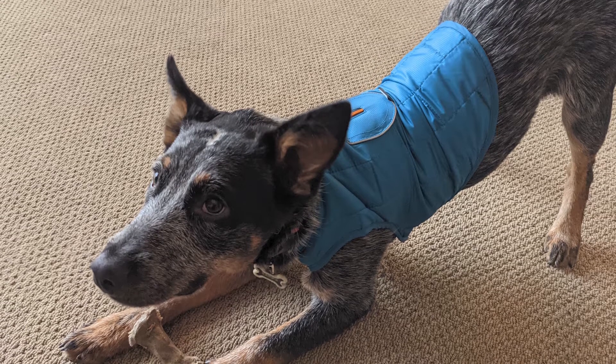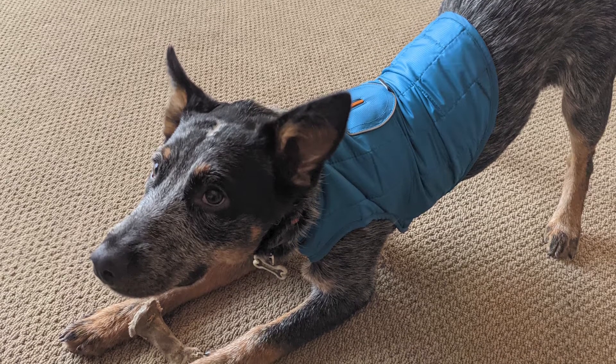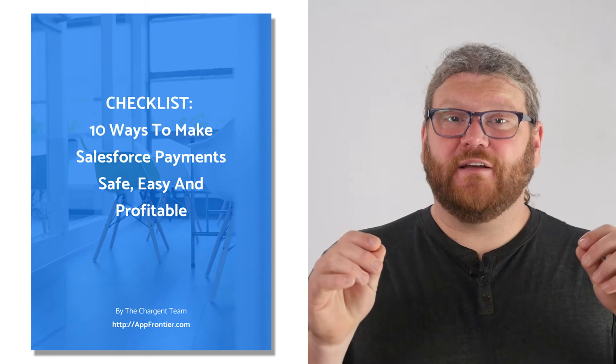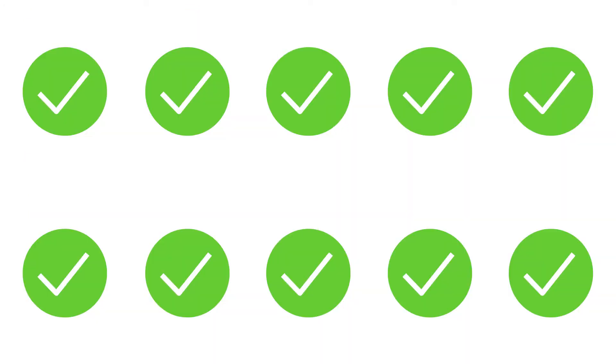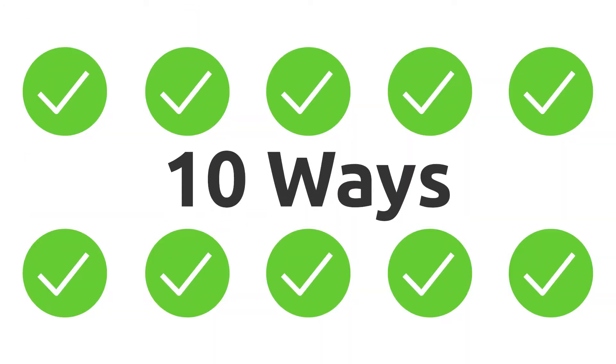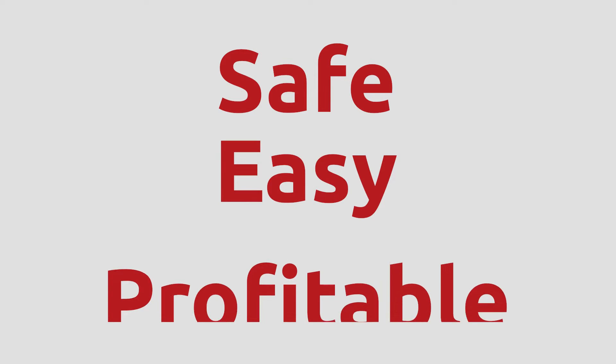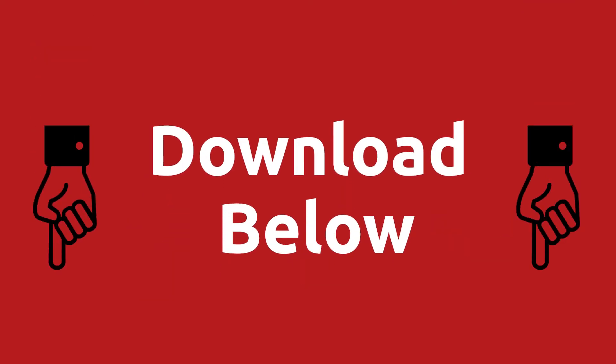So I have proof of payment and I know everything's good to go. Zappa's stay at the pet resort is bought and paid for. As a customer of Doggo Daycare, I am quite a happy puppy owner — and that was just so simple to pay for my reservation. By the way, we have made a special checklist for you on 10 ways to make Salesforce payments safe, easy, and profitable. Check out that link in the description below.